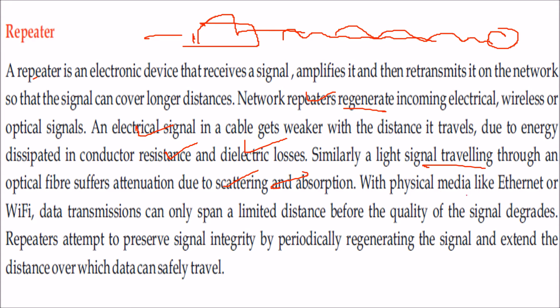With physical media like Ethernet or Wi-Fi, data transmission can only span a limited distance before the quality of the signal degrades.